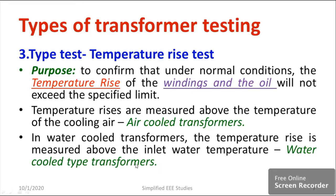Based on the cooling arrangement, you can classify transformers as air-cooled, water-cooled, or air blast type. We need to ensure the temperature rise should not be abnormal. If there are rapid changes, we say that abnormal temperature rise has taken place in the transformer, which means the insulation is not sufficient.